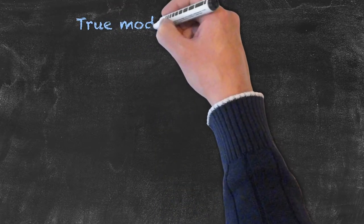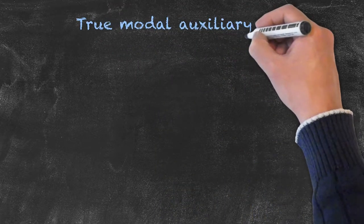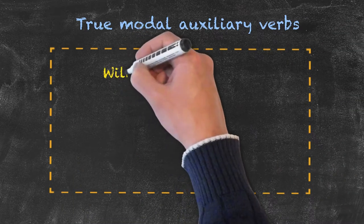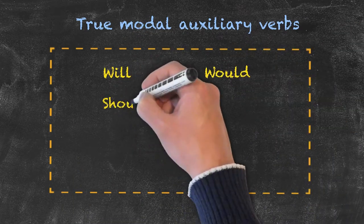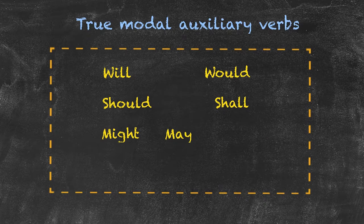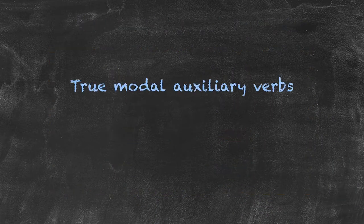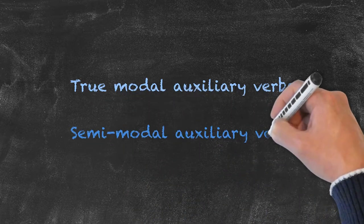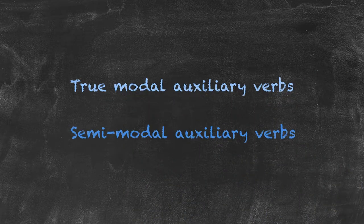In the English language there are nine true modal auxiliary verbs: will, would, should, shall, might, may, must, can, and could. There are other modals as well. These are called semi-modals, and we will be looking at the difference between true modal auxiliary verbs and semi-modals briefly a little bit later on in this presentation.